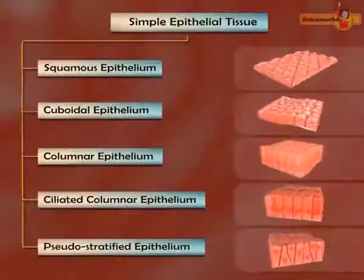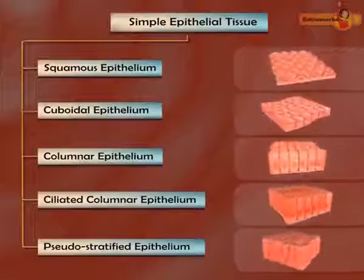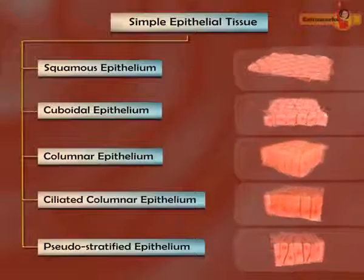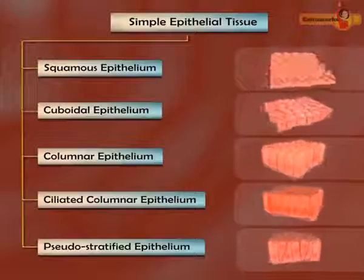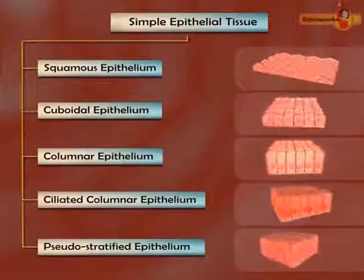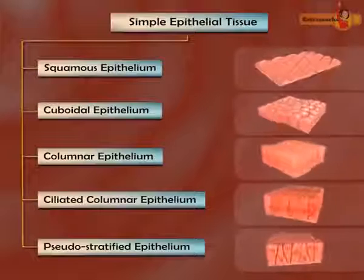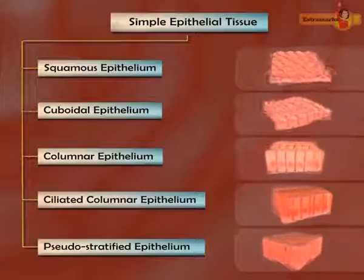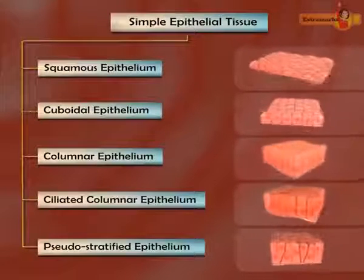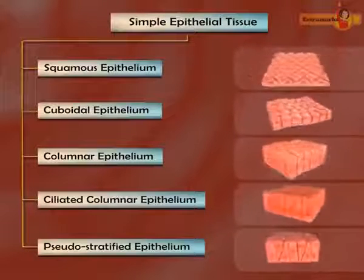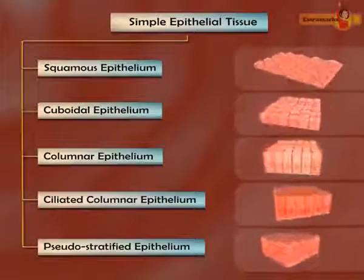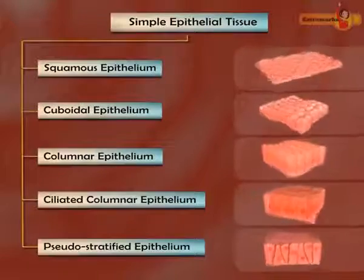The different types of simple epithelium tissues have a single layer of cells and thus do not offer much protection, but act as secretory and absorptive surfaces.